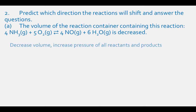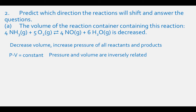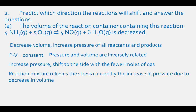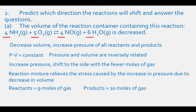For part A, if we decrease the volume of this reaction mixture, we will also increase the pressure of all the reactants and products because pressure times volume equals a constant — pressure and volume are inversely related. If we increase the pressure, the equilibrium will shift to the side with fewer moles of gases. The reactants have 9 moles of gas (4 from NH3 and 5 from O2) and the products have 10 moles of gas (4 from NO and 6 from H2O). The reaction shifts to the left, toward the reactants.